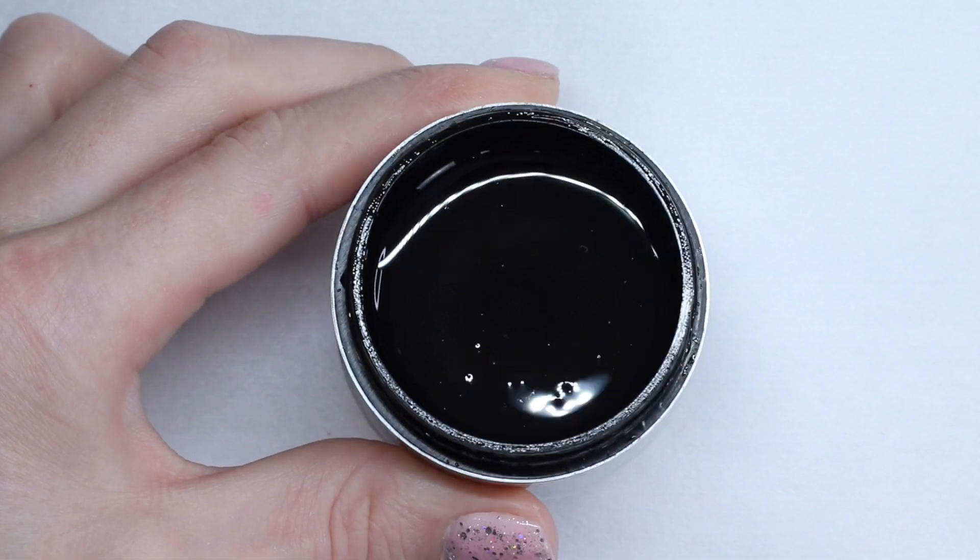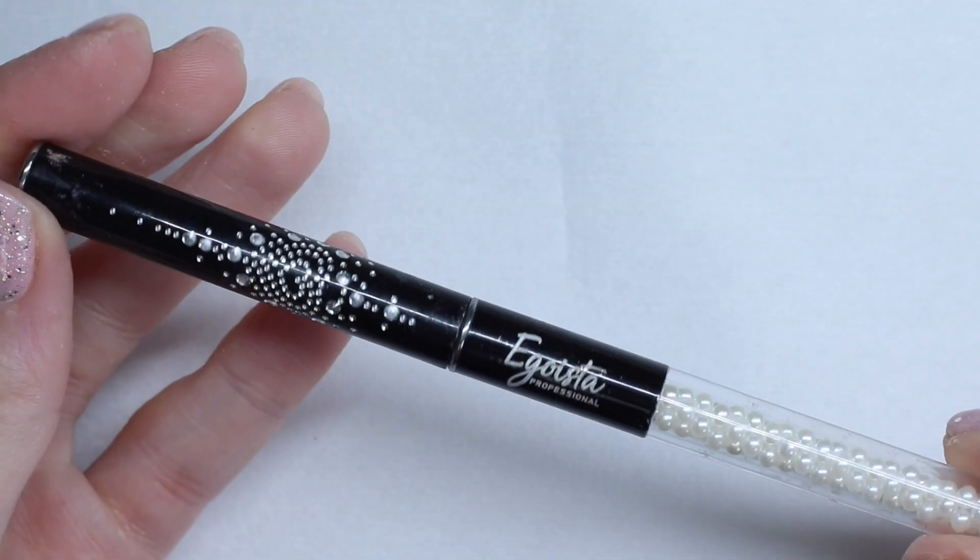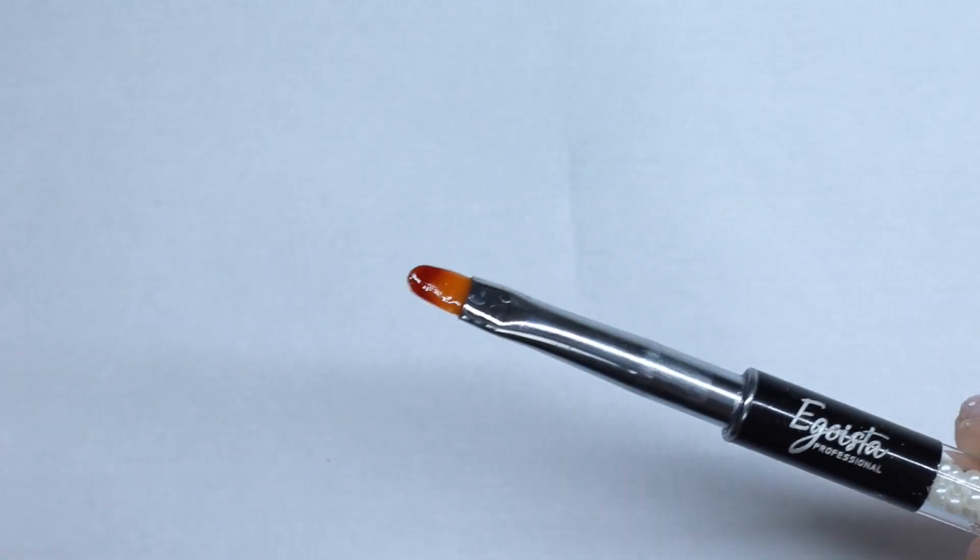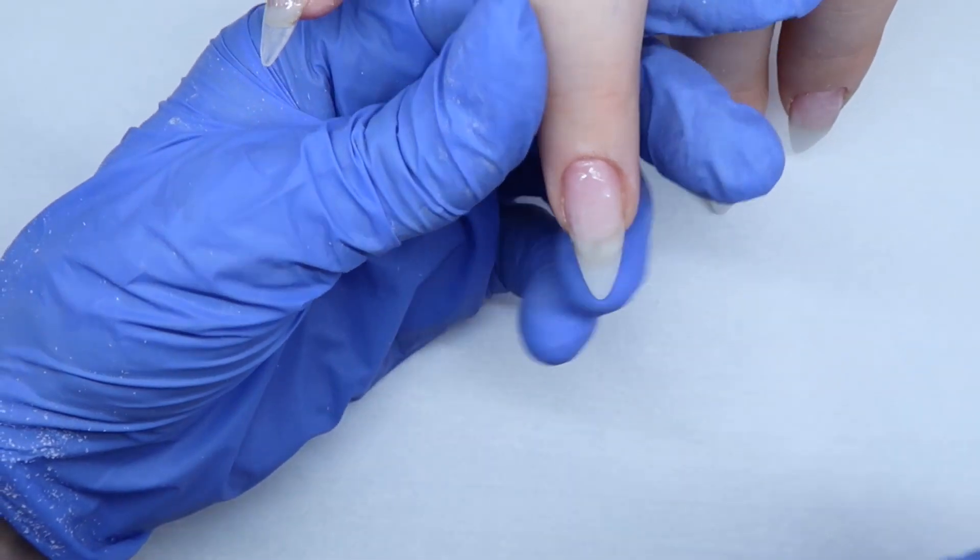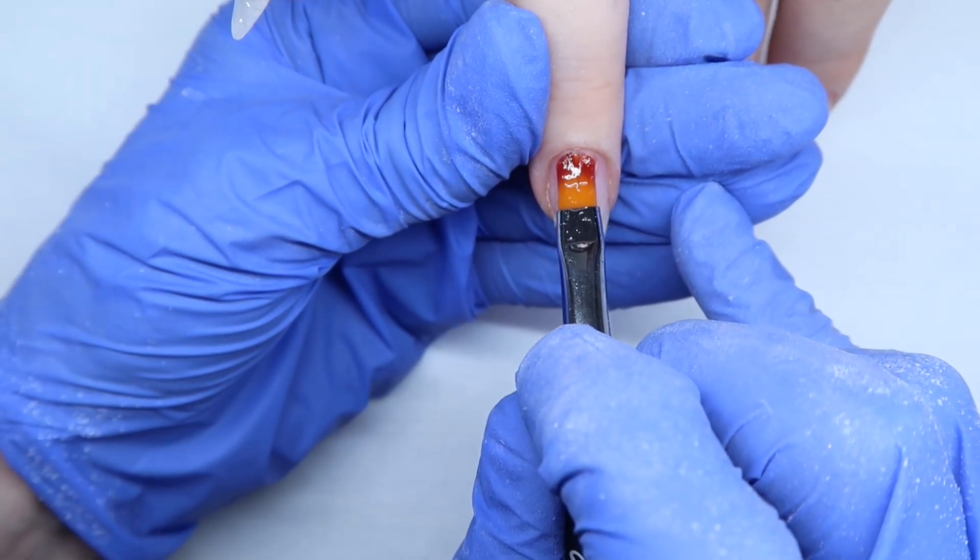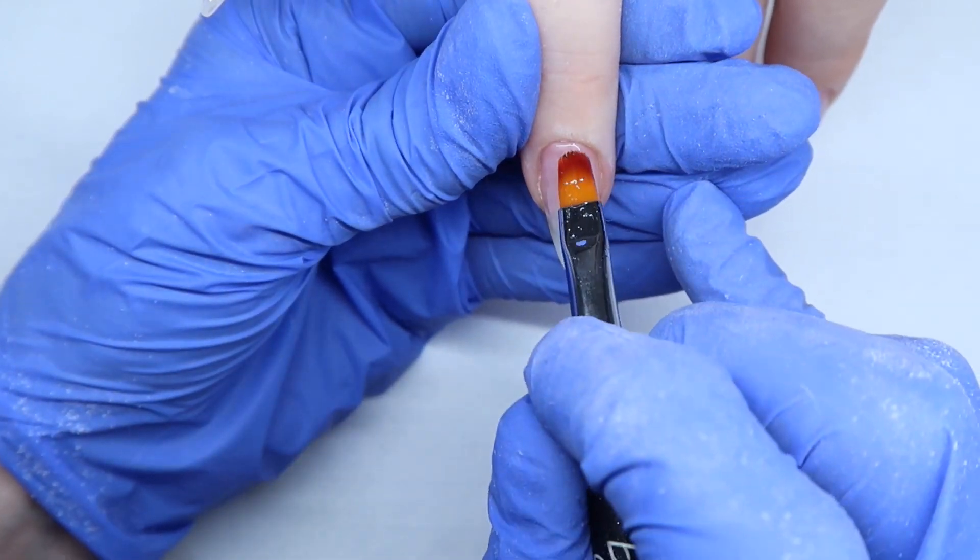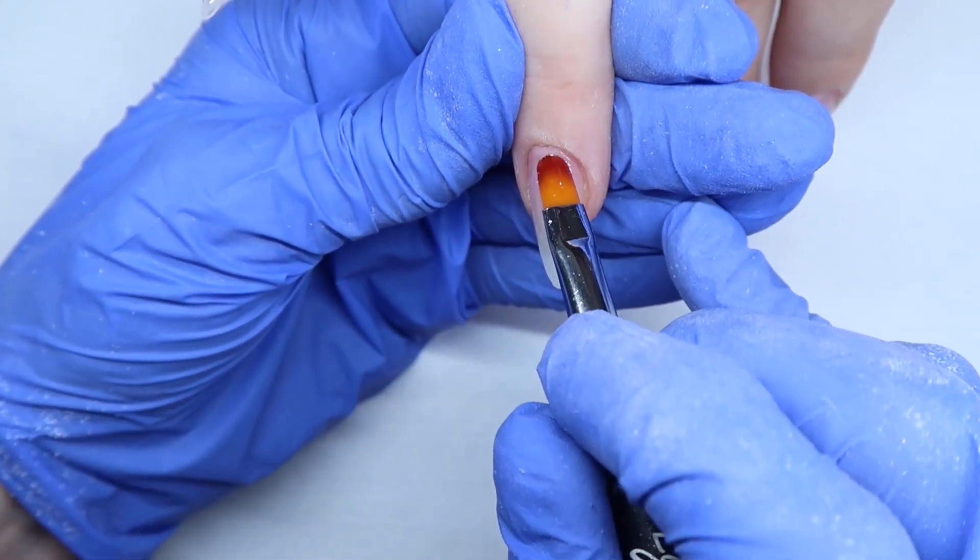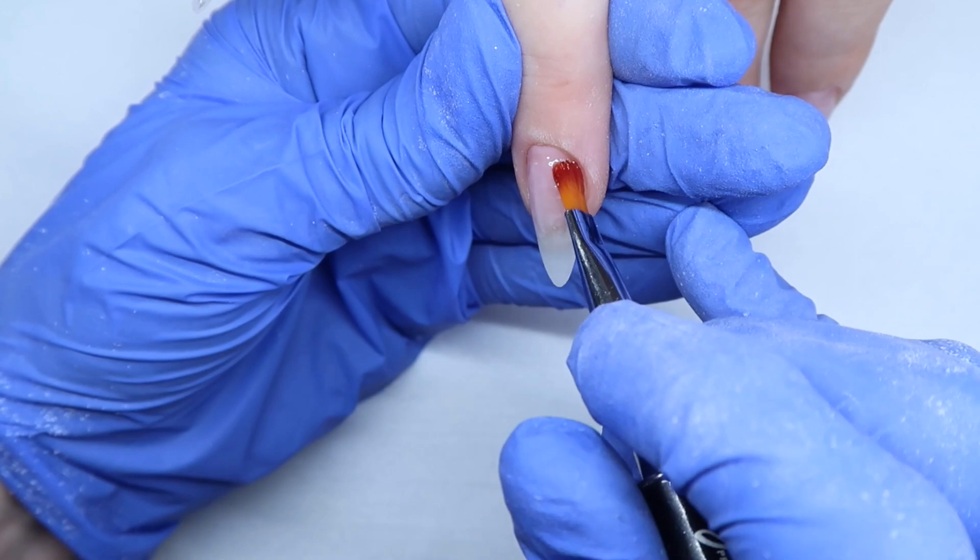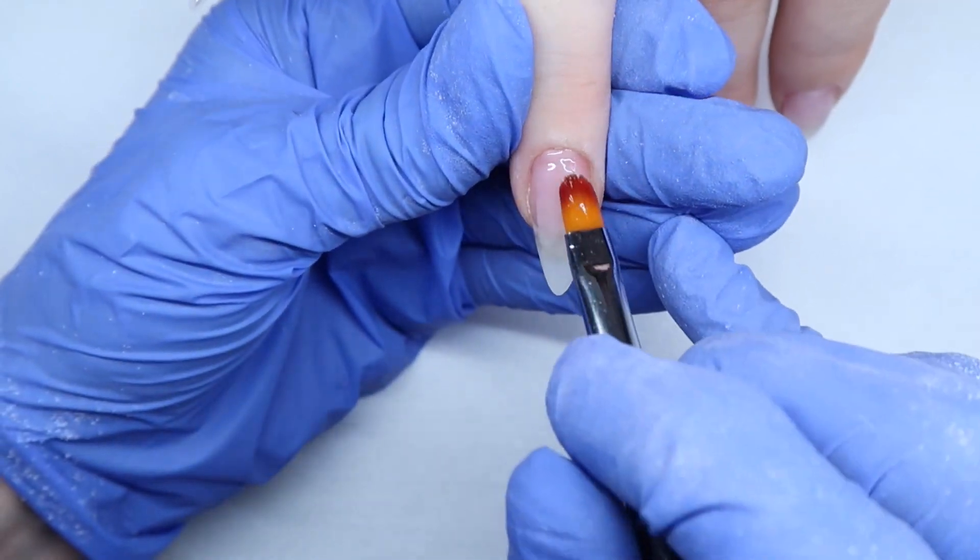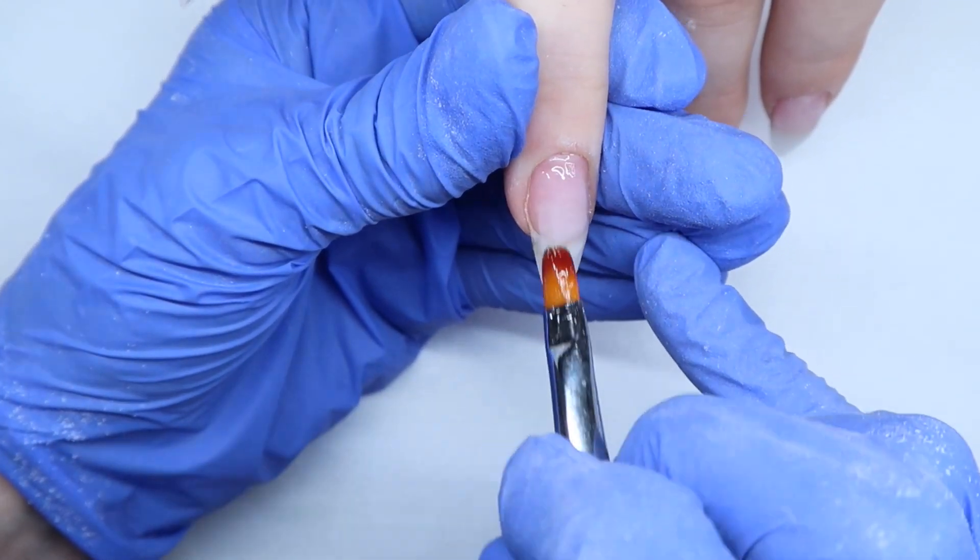In this set I'm using Light Elegance Cool Gel with my Egoista brand oval gel brush. And I've already removed her past set and prepped her nails. And now I'm just coming in and doing a thin base layer. I do this on all her nails and give that a cure.